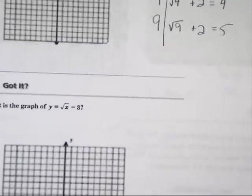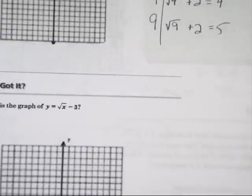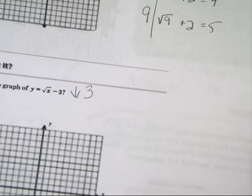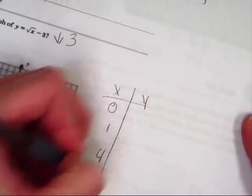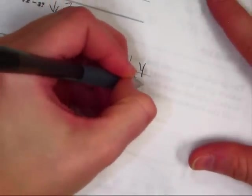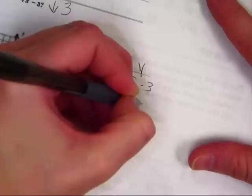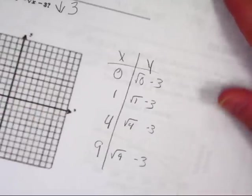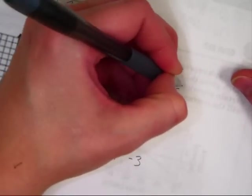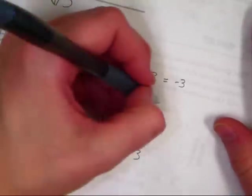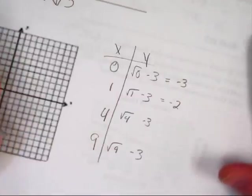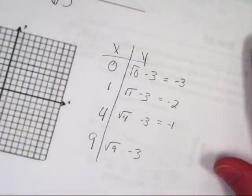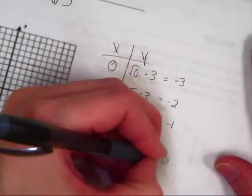Let's try the next one. What is the square root of x minus 3? You should understand that's going to move down 3. So I'm going to get my x-y chart, pick perfect squares because these make the pretty ones, and plug them in. The square root of 0 minus 3, the square root of 1 minus 3, the square root of 4 minus 3, the square root of 9 minus 3. That gives us: 0 minus 3 is negative 3; 1 minus 3 is negative 2; 2 minus 3 is negative 1; 3 minus 3 is 0.